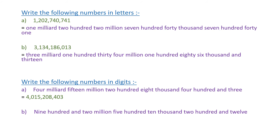Nine hundred and two million, five hundred ten thousand, two hundred and twelve. The first family is millions, so I write 902, then comma. Then 510, comma. Then 212. The number in digits is 902,510,212.